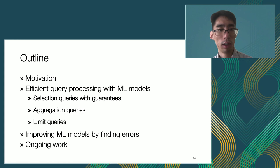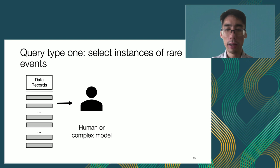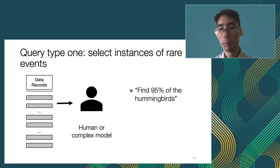The first query type I'll talk about is selection queries with guarantees. In this query type, we're trying to select instances of typically rare events. The naive method would be to take all the data records — for example, frames of a video — and annotate them with a human or complex model. These queries take the form: find 95% of the hummingbirds, or find 95% of the mentions of bribes.